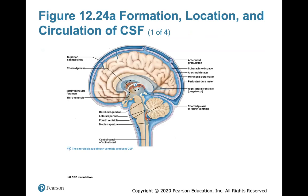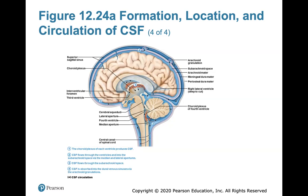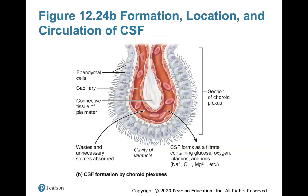Here's a look at the formation, location, and circulation of cerebrospinal fluid. It begins where the choroid plexus of each ventricle produces CSF. That flows through the ventricles and into the subarachnoid space via the median and lateral apertures. CSF flows through the subarachnoid space to surround the brain and is absorbed into the dural venous sinus via the arachnoid granulations.